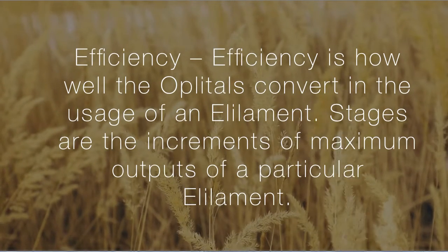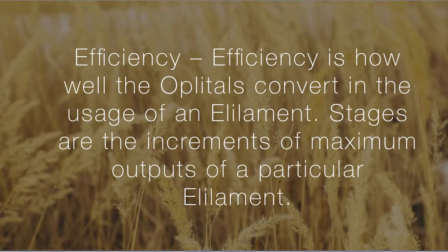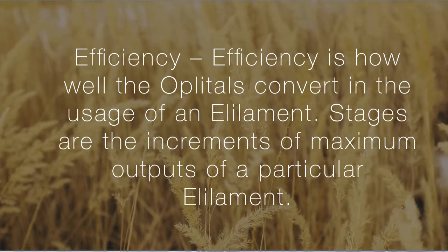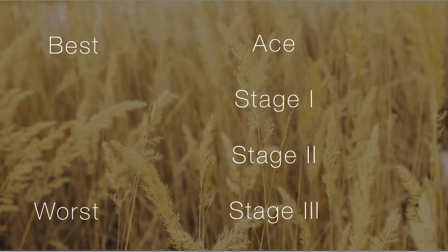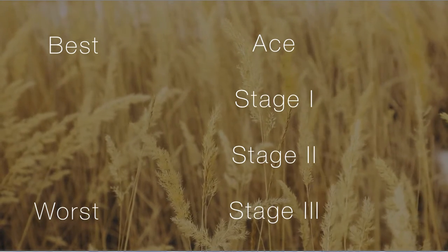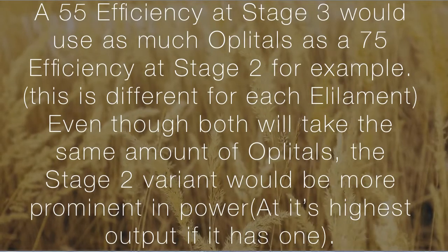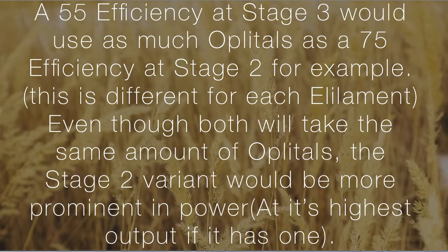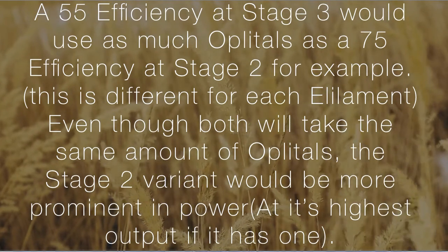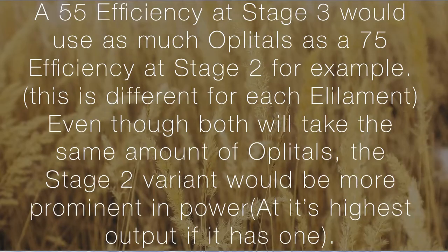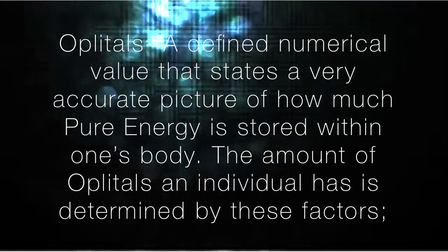Efficiency is how well the oplotals convert in the usage of an alilliment. Stages are the increments of maximum outputs of a particular alilliment. The order of stages from worst is stage three, then stage two, then stage one, and then ace is the best. A 55 efficiency at stage three would use as much oplotals as a 75 efficiency at stage two, for example. This is different for each alilliment; even though both will take the same amount of oplotals, the stage two variant will be more prominent in power.